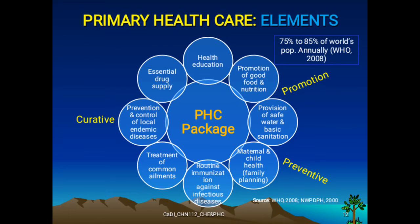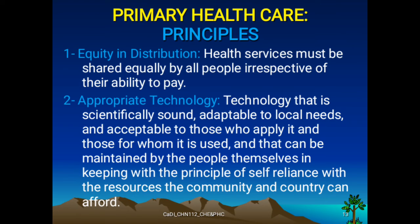The primary health care package includes promotion, prevention, and curative care, and every idea here summarizes the family health package. The principles include: equity in distribution — health services must be shared equally by all people in respect for their ability to pay — and appropriate technology, meaning technology that is scientifically sound, adaptable to local needs, acceptable to those who apply it and those for whom it is used, and that can be maintained by the people themselves in keeping with the principle of self-reliance, with resources the community and country can afford.